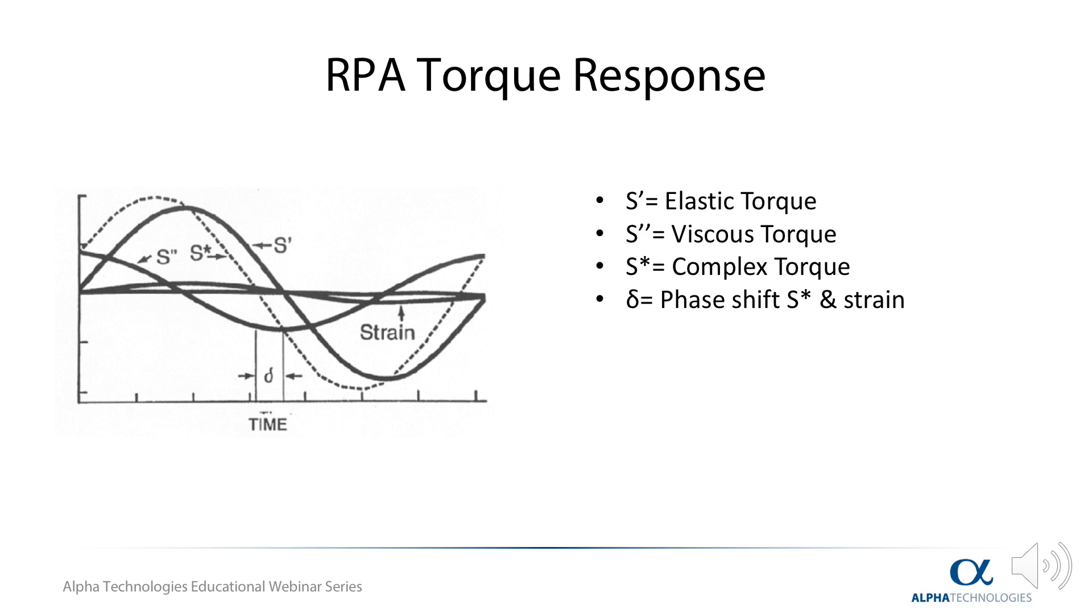As shown, this complex torque is out of phase with the applied strain. A Fourier transform is applied to the complex torque curve and used to separate the complex torque, otherwise referred to as S star, into two additional curves. The first is an in-phase torque signal, S prime. The second, a 90-degree out-of-phase signal, S double prime.